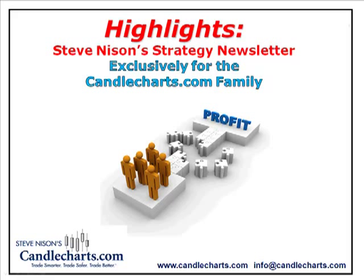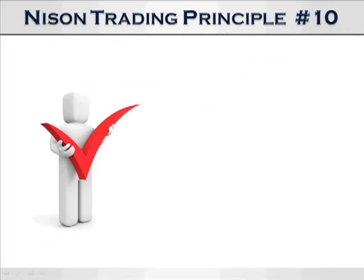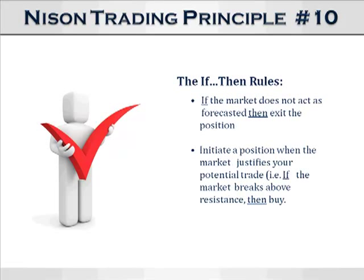So my if-then scenario has a lot of subcomponents. The two I want to focus on in this session are actually among my Nissen Trading Principles — I have about 15 of them. I actually have like three or four if-then rules. If the market does not act as forecasted, then exit the position. And then initiate a position when the market justifies your potential trade.